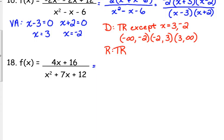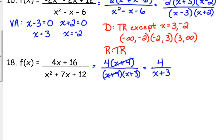Okay. So let's look at number 18 as well. Let's factor out a GCF of 4 in the numerator. The denominator does not have a GCF. It is just x plus 4 times x plus 3. This time, something does cancel.